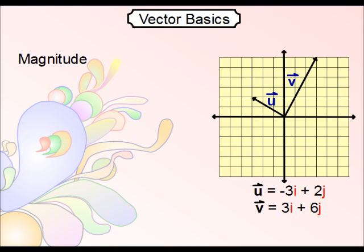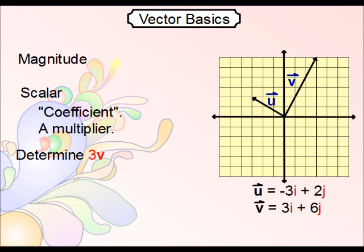Another way you can address magnitude is by using a scalar. A scalar is, in a sense, it's a multiplier. You can think of it as a coefficient for an ordinary variable. So if you were asked to determine, say, 3v, you are, in a sense, just tripling all the values of vector v.